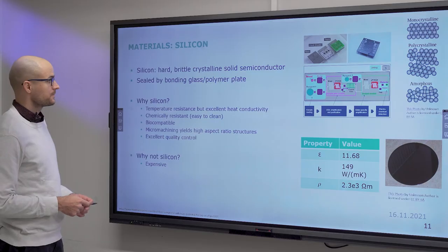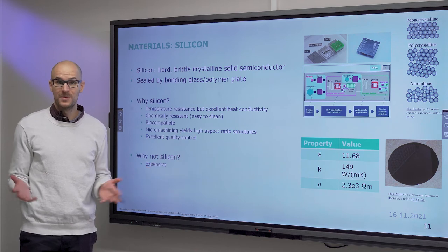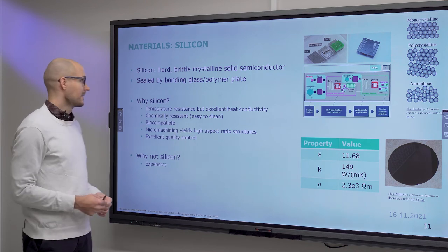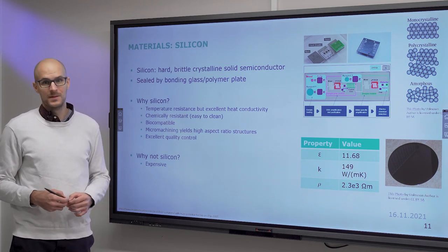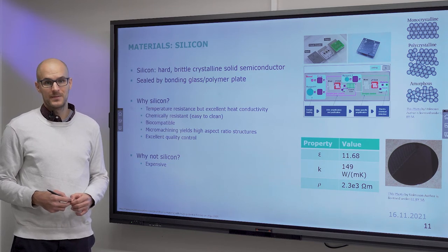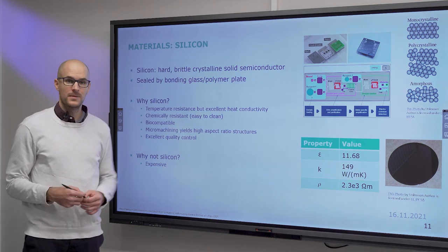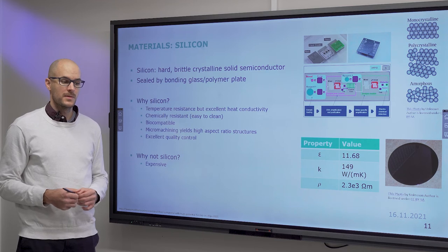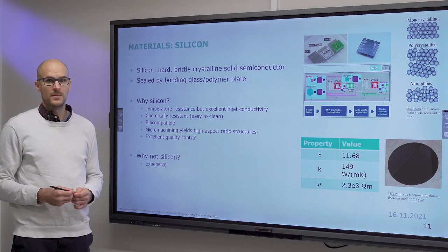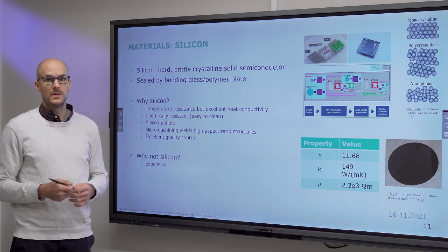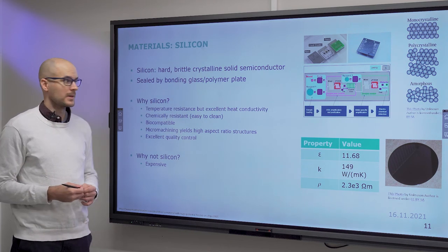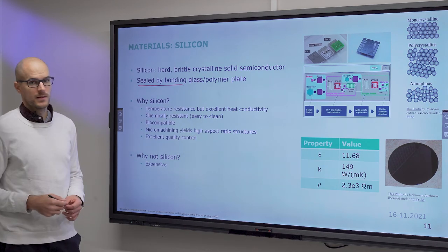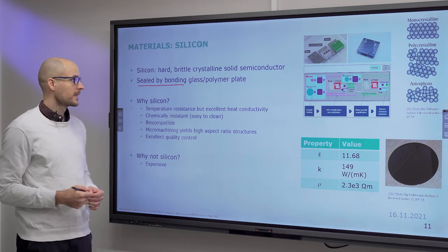Silicon is a hard crystalline semiconductor and has been historically used as the substrate for microelectronics, but it is also often used in MEMS and bioMEMS. In a previous lecture I talked about neural probes with embedded microfluidic channels — those were also micromachined out of silicon. It is then sealed by bonding glass or polymer to it — you can bond glass, plastic, or even PDMS to it.